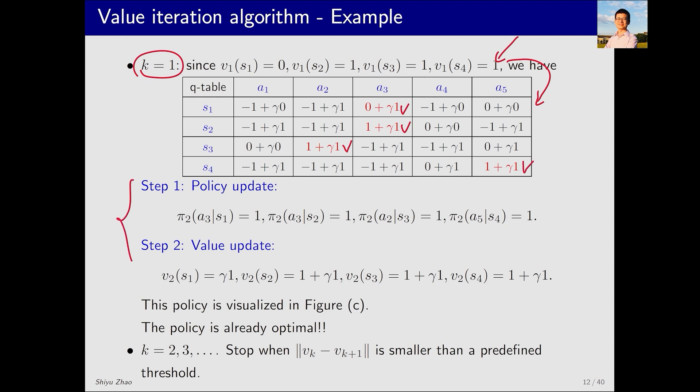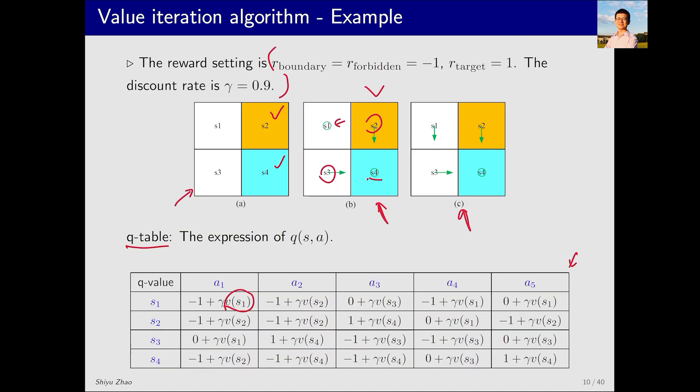Now, let's take a look at the new policy. Returning back to the previous slide, what does this policy look like? It's shown like this. We can tell that this is already the optimal policy. This means that with just two iterations, we've already found the optimal policy from a random initial policy. This example is very simple. If the example were more complex, it would require more iterations.